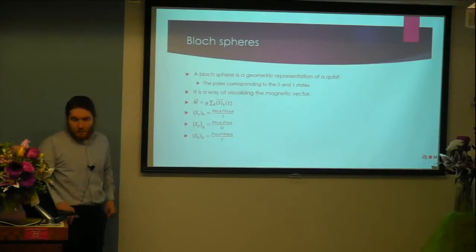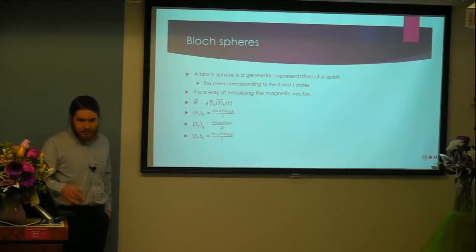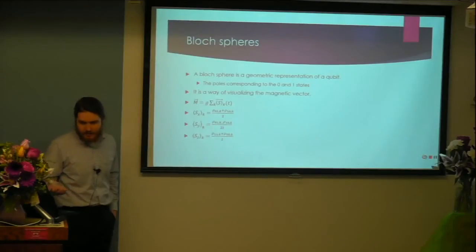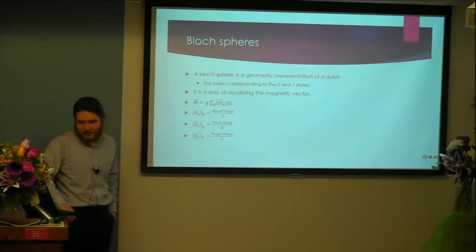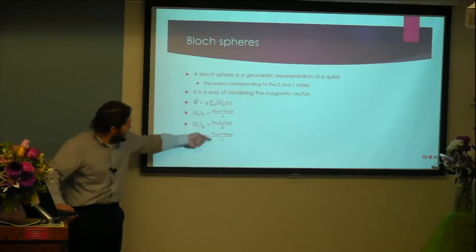That allows us to see that they'd be represented by a sphere — a Bloch sphere. A Bloch sphere is a geometric representation of a qubit where the poles of the sphere represent the 0 and 1 states. More usefully, it's a way of visualizing the magnetic vector of a spinning electron as it moves through a magnetic field. The magnetic vector is equal to g times the summation of k of s-k of time t, where s-k is the combination of the x, y, and z components of the vector, which are controlled by equations I will show later.